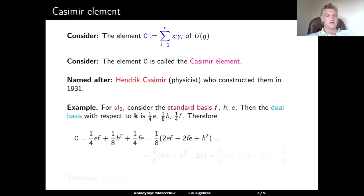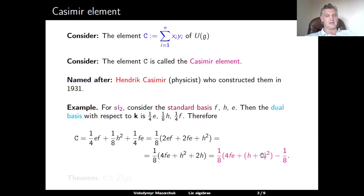If we factor out 1/8, we have in the bracket the expression 2EF plus 2FE plus H squared, which we can rewrite using the fact that EF equals FE plus H as 4FE plus H squared plus 2H. Adding and subtracting 1, we can get in the bracket the expression 4FE plus (H+1) squared, which we used heavily in our study of simple finite-dimensional SL2 modules in the previous lectures.